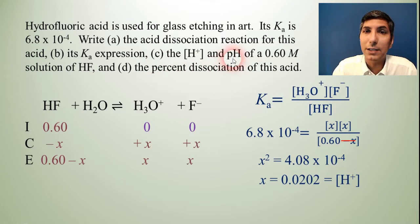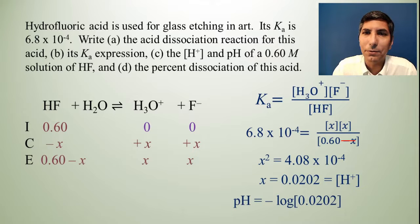Now the next part says what's the pH? Well, that's the easy part, isn't it? If we know the H+, the pH is just negative log of the H+ concentration. So negative log of 0.0202. And you can key that into your calculator and get an answer of about 1.69.